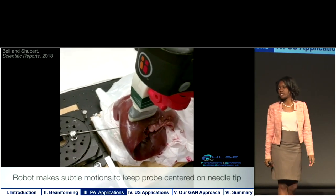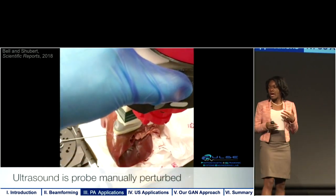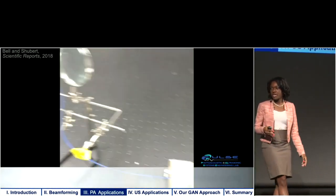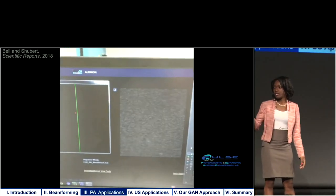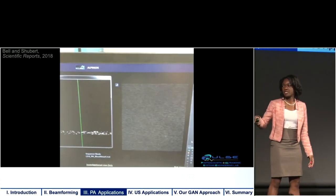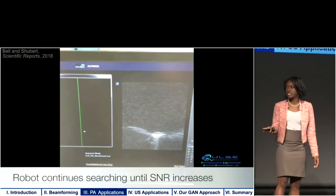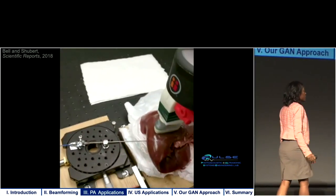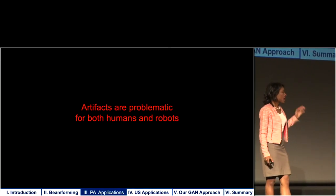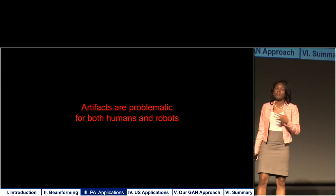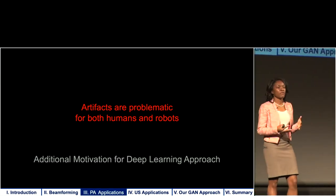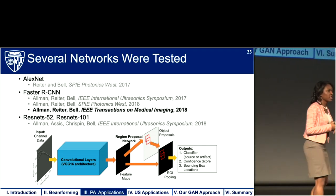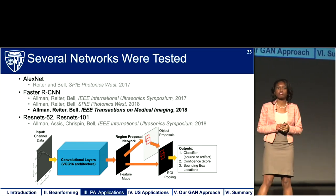In the video published in Scientific Reports, the needle is inserted and advanced into tissue while the ultrasound probe follows the needle tip, making subtle motions to stay centered on it. We can override the robot's motion to find our biopsy target and then release, and the robot is able to recover the needle tip position again. Viewing the screen, the photoacoustic image initially shows poor SNR making it difficult for the segmentation algorithm to find the signal, but the robot continues searching until it finds the signal and confidently centers on the needle tip. This demonstrates that artifacts are problematic not just for humans interpreting images but also for robots, providing additional motivation for a deep learning approach to image formation.